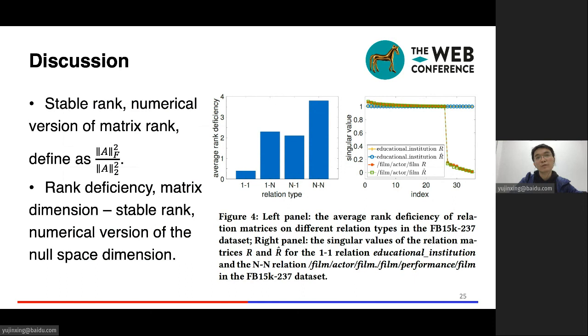We look into the embedding relation matrix, compute the stable rank, which is the numerical version of a matrix rank. We define rank deficiency as the matrix dimension minus the stable rank. It is the numerical version of the null space dimension. Large rank deficiency indicates that the linear transformation can map many different and linearly independent matrix X into the same matrix. We compute the average rank deficiency for different relations. The left part in the figure shows that the relation matrix of one-to-n, n-to-one, and n-to-n relations are large. Let's look at the concrete example. In the right part of the figure, we can see that all the singular values of the one-to-one relation are about one. The singular values of the n-to-n relation are close to one or zero. So MQuadE can adapt to use singular matrix for non-injective relations.